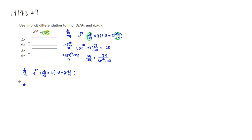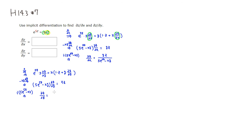We do the same thing — subtract xy times the partial of z with respect to y. We end up getting 5e to the 5z minus xy times the partial of z with respect to y equals xz. So the partial of z with respect to y is xz over 5e to the 5z minus xy — exactly the same denominator.